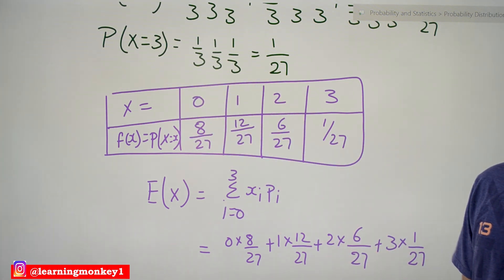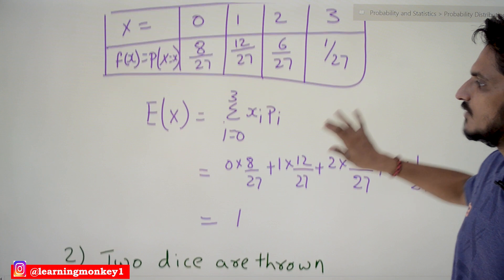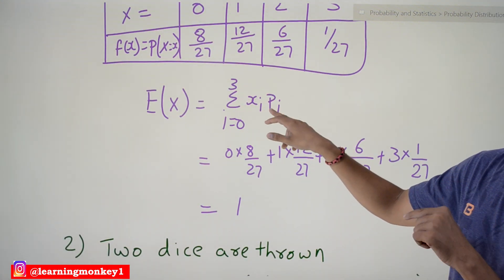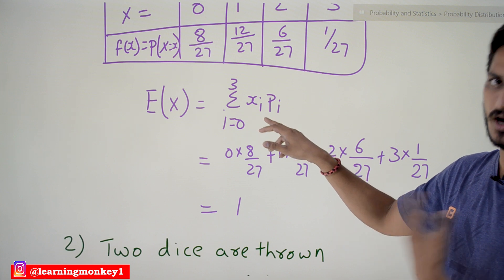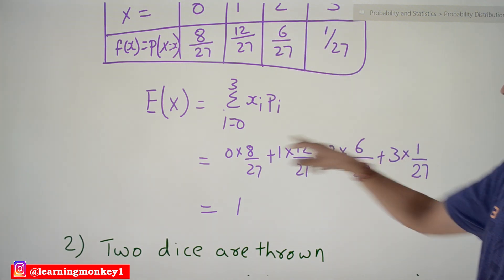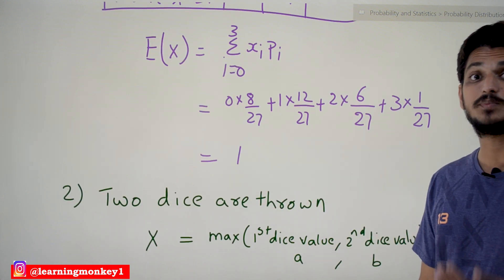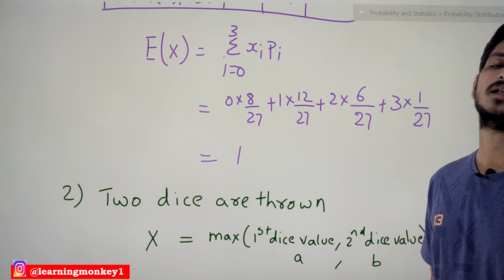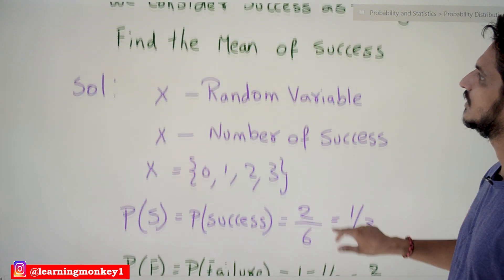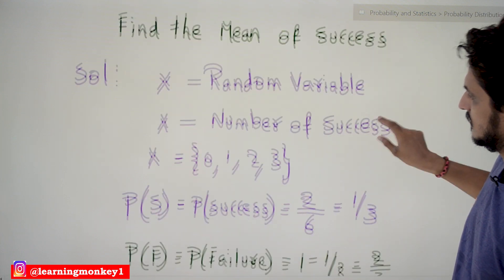The expected value is sigma (i = 0 to 3) of X_i × P_i. If you do this calculation, the expected value equals one. So the expected number of successes is one — that is the mean of the success, which is what our question asked us to find.